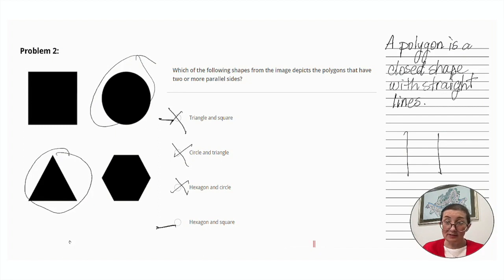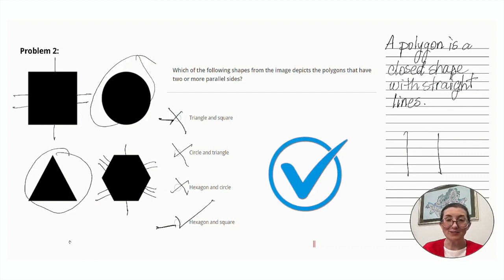Now let's look to make sure the square and the hexagon do fit polygons with parallel sides. We've got one here. Here. Here. So there are two parallel sides on the square. And on the hexagon, we've got one here, two here, and three here. So this one is the right answer, hexagon and square.